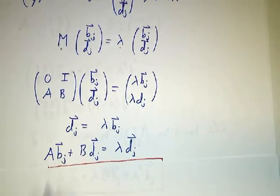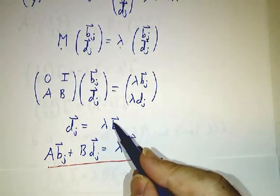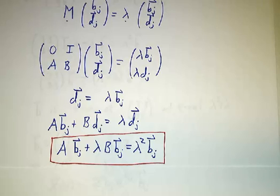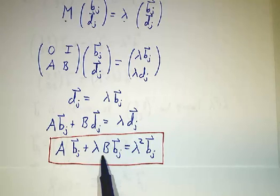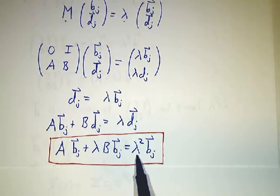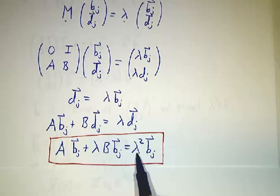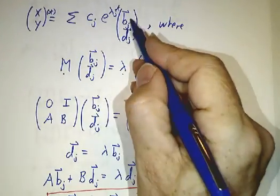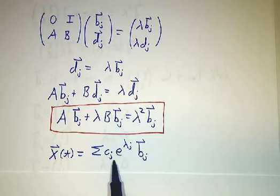And the second equation says that Abⱼ plus Bdⱼ is λ dⱼ. And if we substitute this in here, we can write everything in terms of b. And there's our equation. It's not quite an eigenvalue equation because it involves two matrices, A and B. And it involves a quadratic equation. You've got λ squared over here and λB and an A. But if you find values of λ and vectors b that satisfy this equation, then those are the things that are going to go back in this expansion. And those are the things that are going to contribute to x.